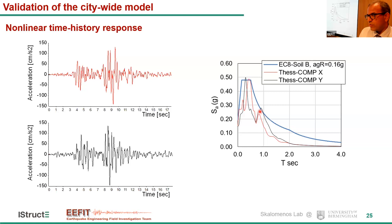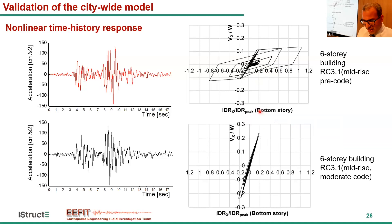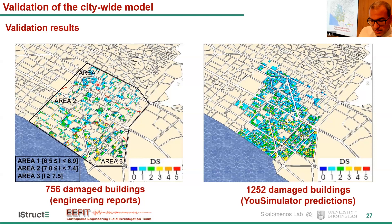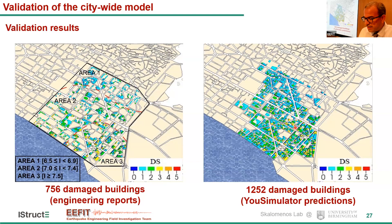These are some representative results showing how the U-Simulator works. The time history analysis results are shown for two representative six-story buildings — a pre-code building and a moderate-code building — with two different construction periods. The damage index is above 10% for the old pre-code building, showing excessive damage, while the moderate-code building shows slight damage. The validation results compare 756 damaged buildings from engineering reports with our database. Additionally, we alter the code-based trilinear curves of each specific building through inverse time history nonlinear analysis to minimize the discrepancy between simulated and collected data, statistically reflecting the individual characteristics of each building.